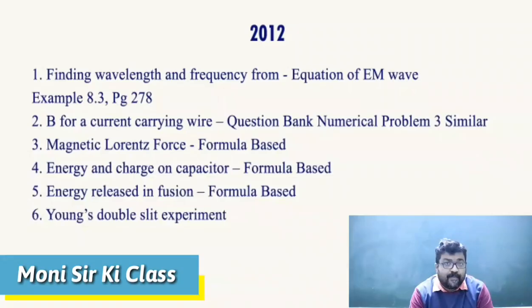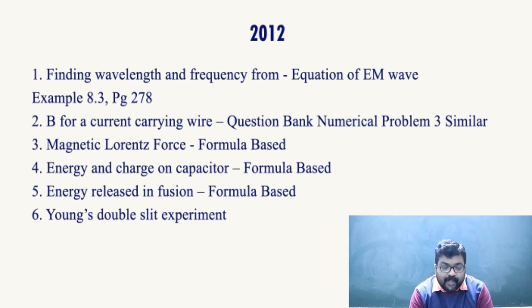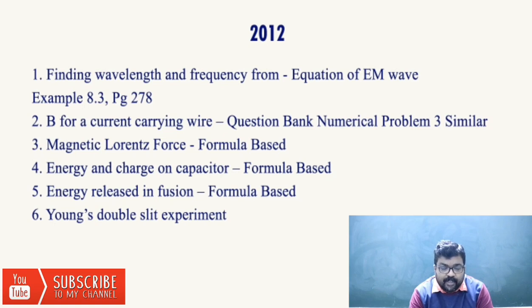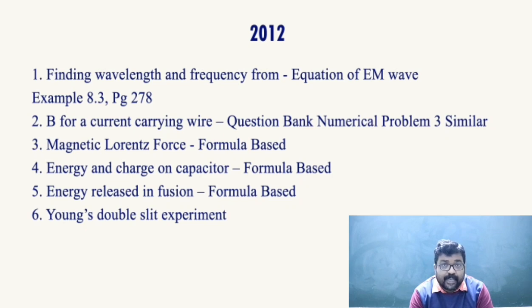Starting from 2012: there was a question on finding the wavelength and frequency from the electromagnetic wave equation — this is from Example 8.3, page 278. Then calculating the magnetic field from a current-carrying wire — this is from the Question Bank, Numerical Problem 3 from the chapter Moving Charges and Magnetism.